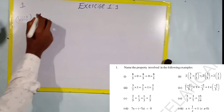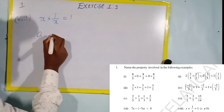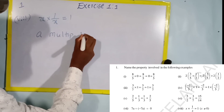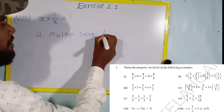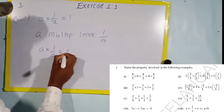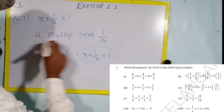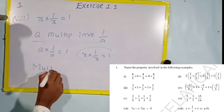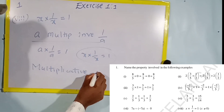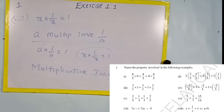Eighth one: x into one by x equals one. The multiplicative inverse of a is one by a. Here, x into one by x equals one — same pattern. So this is the multiplicative inverse property. This completes the first exercise.